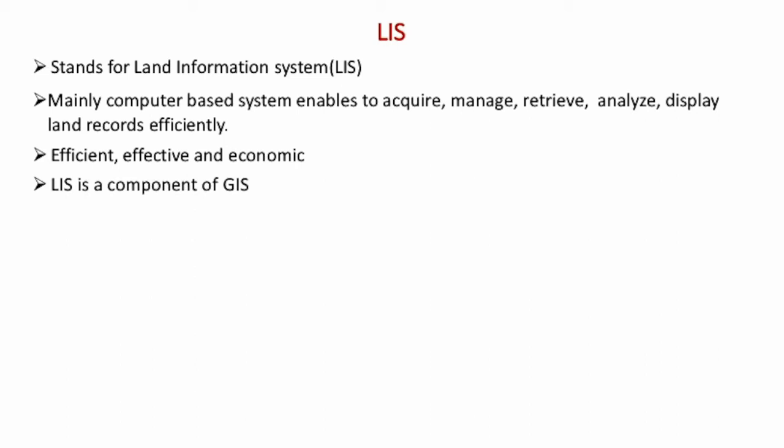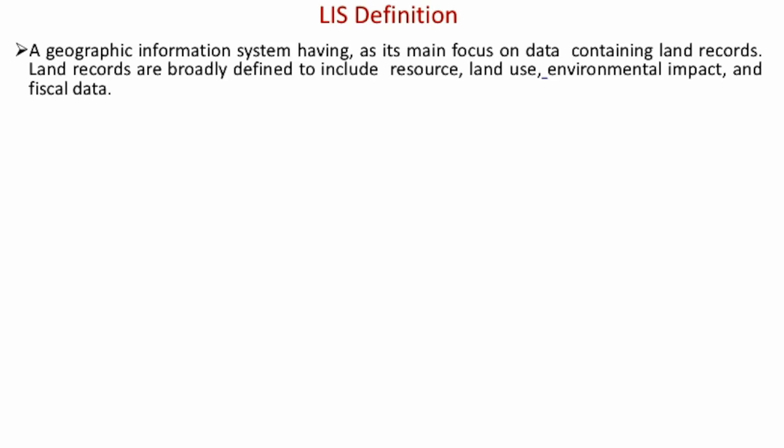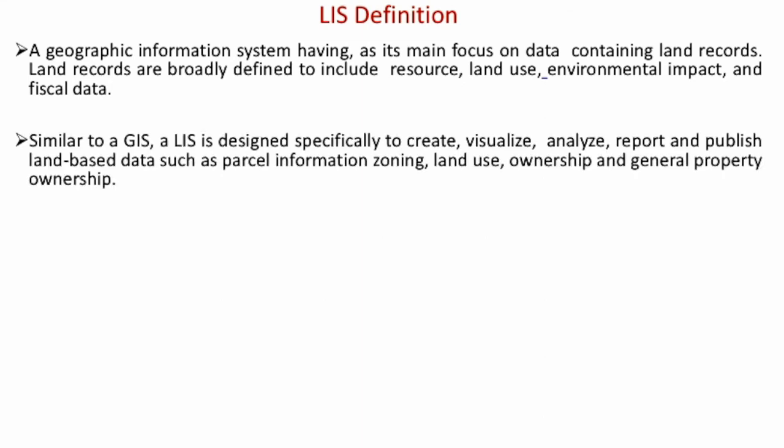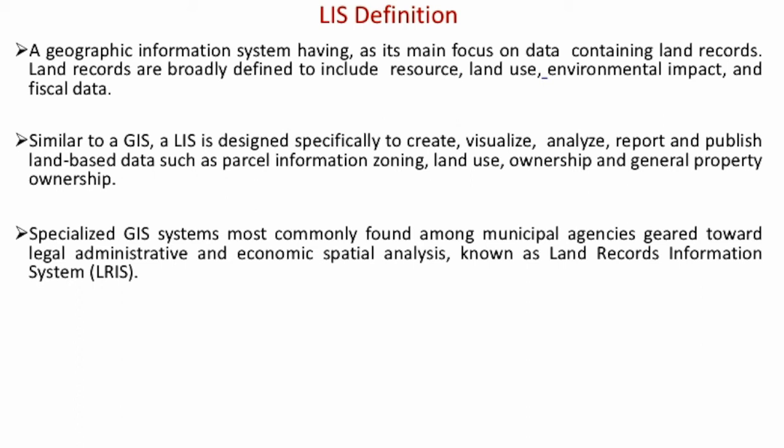LIS is a component or subset of GIS. It is defined as a geographic information system having as its focus data containing land records, supporting land administration and land management. Land records are broadly defined to include resources of land use, environmental impact, and fiscal data. Like GIS, LIS is used to create, visualize, analyze, report, and publish land-related data.